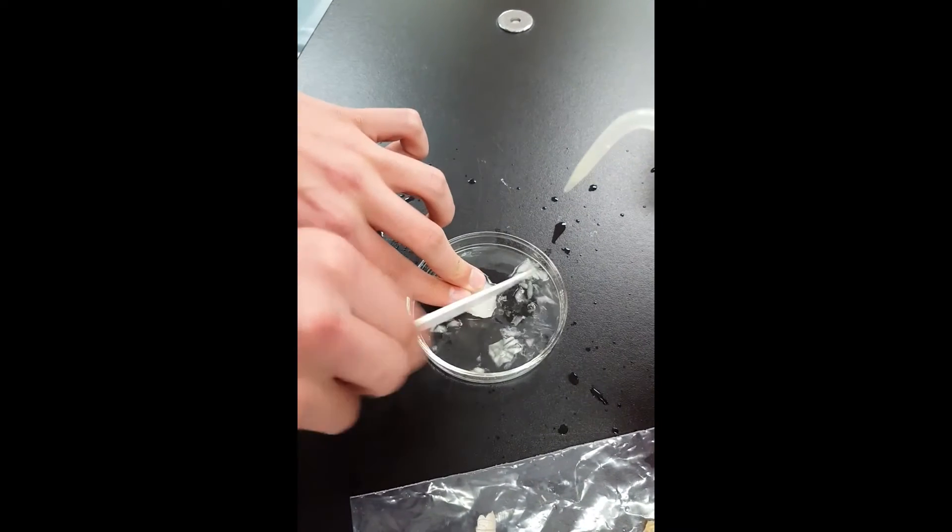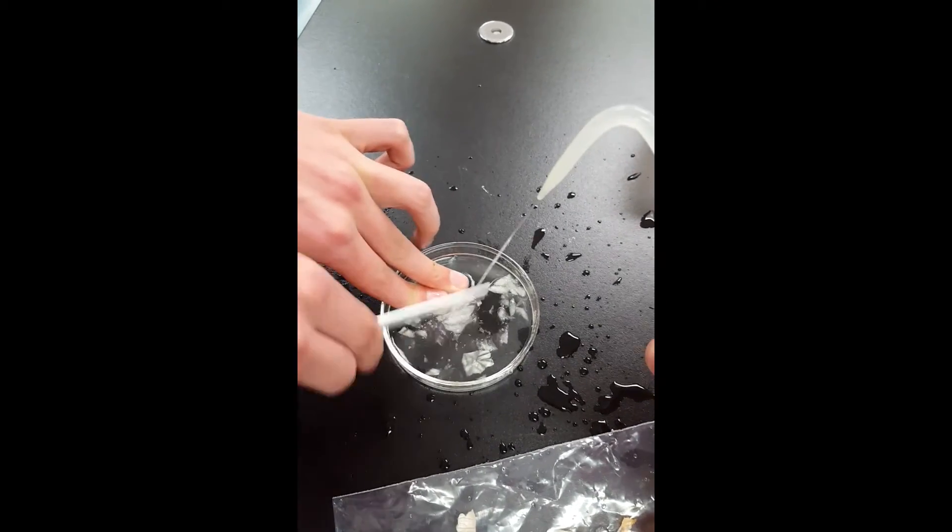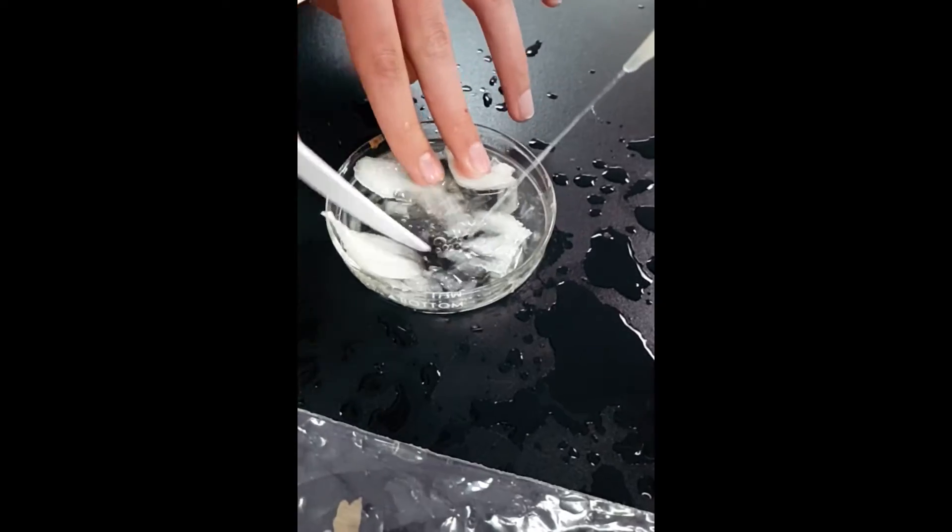The first step involved in this lab is to carefully cut up the onion in a solution of distilled water until it reaches a consistency of applesauce.